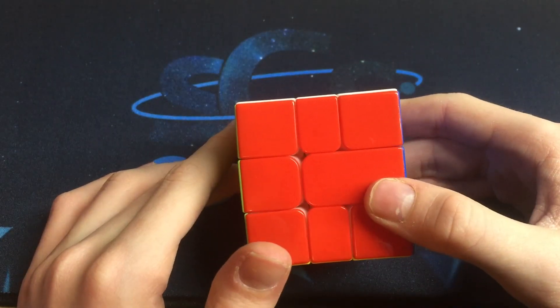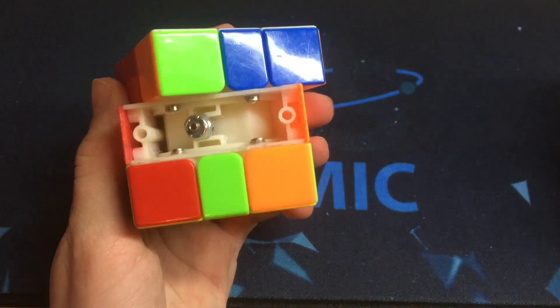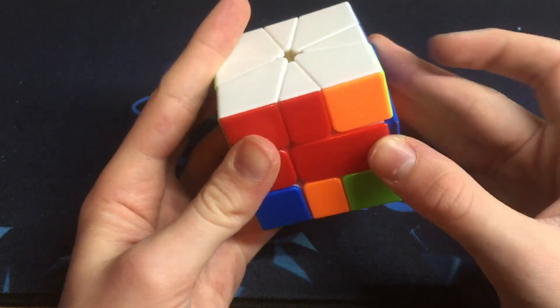This is my Cosmic X-Man Square-1. I like this a lot. This is my favourite Square-1. And I think it is the best you could get. It has the lock nut on it, so it prevents stripping and it is magnetic.